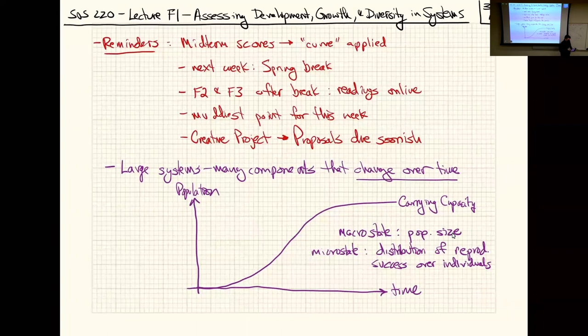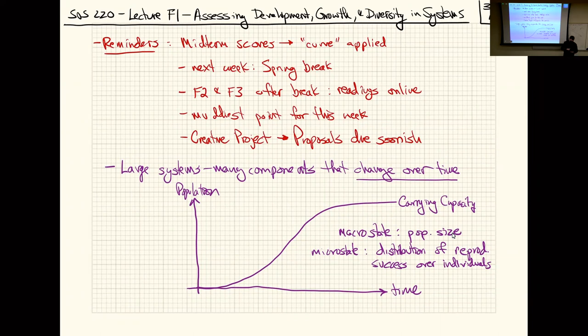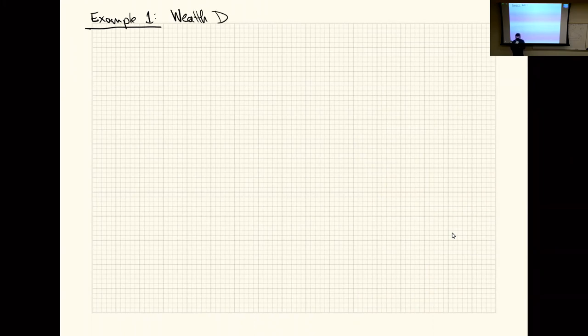To make this more concrete, I'll go back to the economic example we ended on before the midterm: wealth distributions in societies.